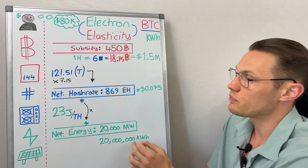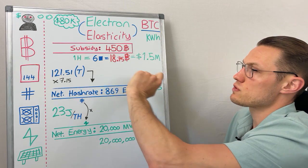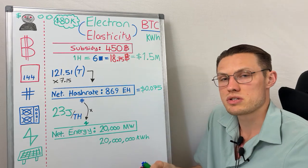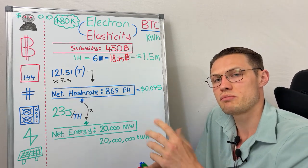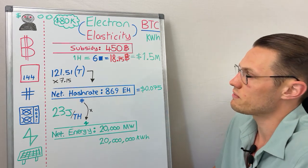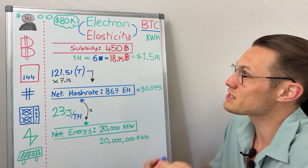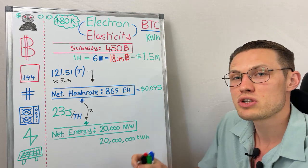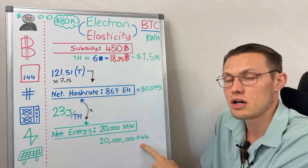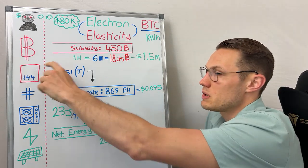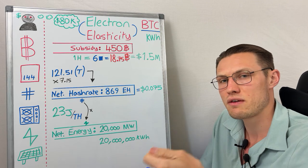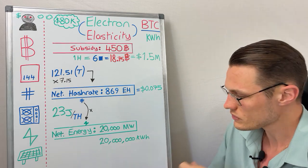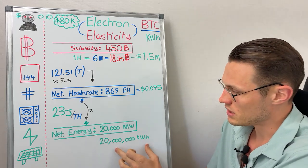Looking at the 144 blocks per day at 450 Bitcoin in total, that approximates 6 blocks at 18.75 Bitcoin per hour — because the subsidy right now is 3.125 Bitcoin per block multiplied by 6. For easy numbers we'll keep it in dollars, but the key takeaway is we can remove the dollar. This is going to be the second commodity on a Bitcoin unit of account. The first commodity is Bitcoin per virtual byte — the fee to store transaction data in a block.